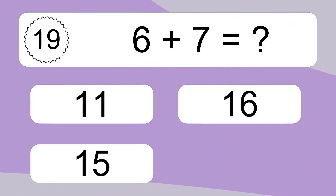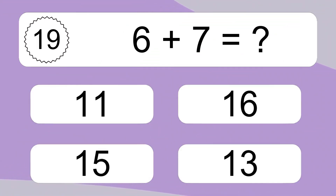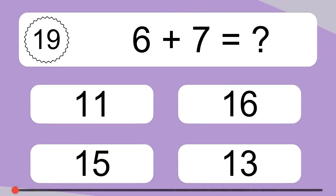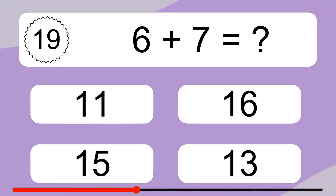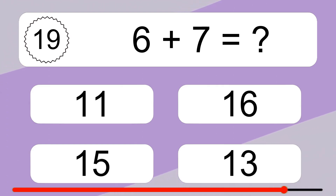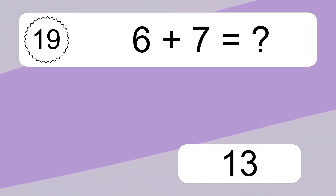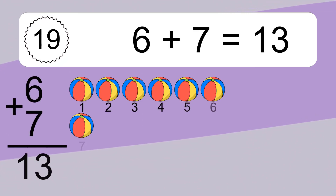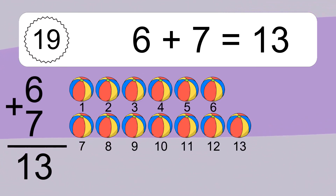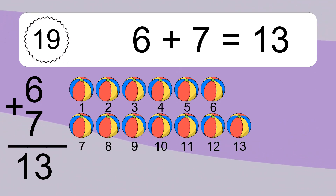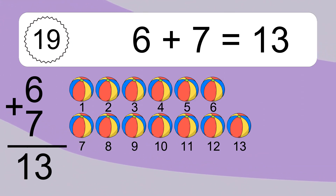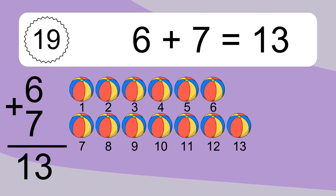6 plus 7 equals what? 6 plus 7 equals 13. Let's count it. 1, 2, 3, 4, 5, 6, 7, 8, 9, 10, 11, 12, 13.